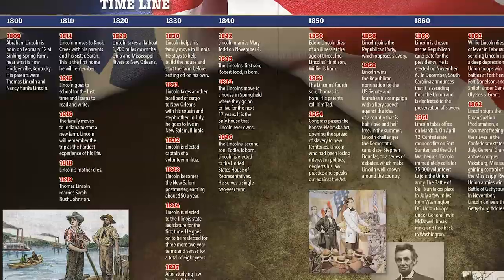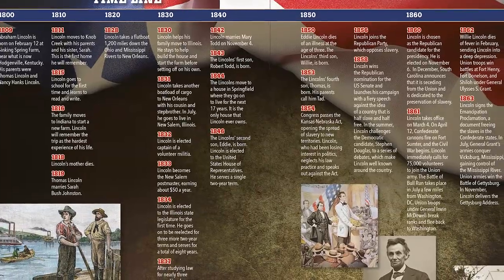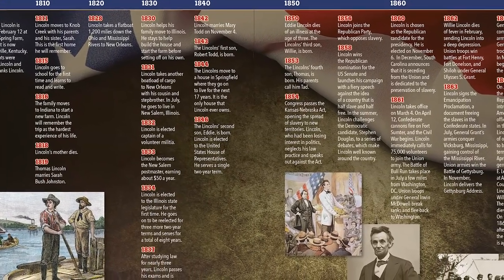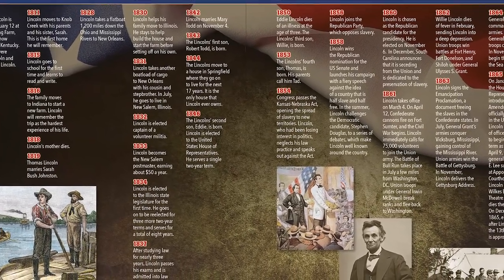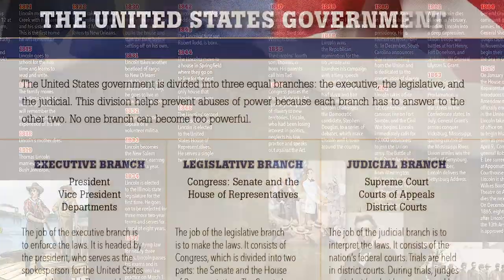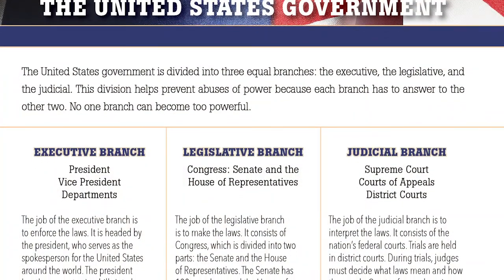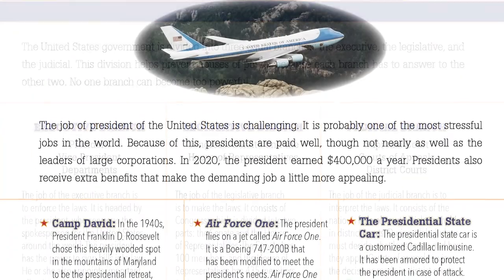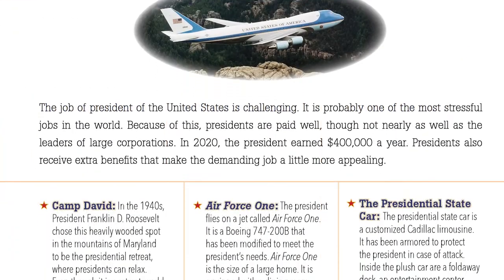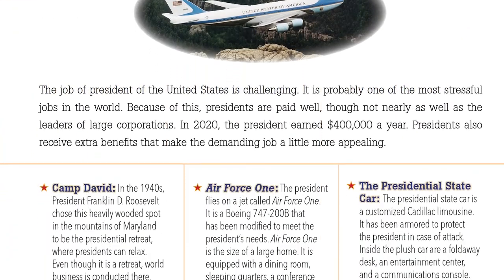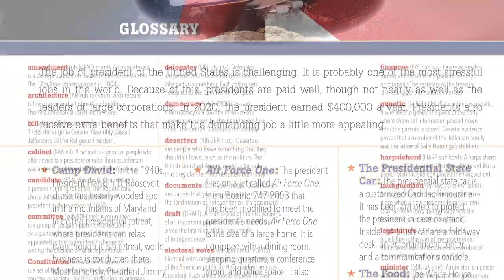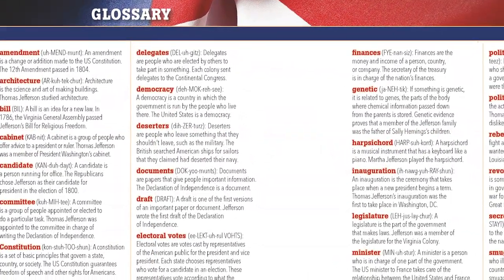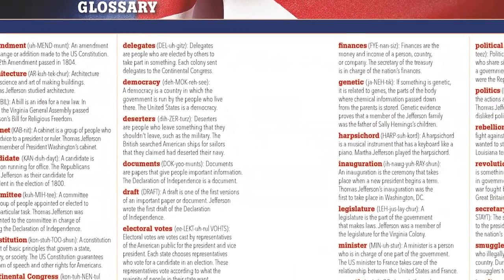A timeline supplements the text and special feature sections dive into topics such as the branches of government, the Electoral College, the White House, and various presidential perks. An index and phonetic glossary support young readers.